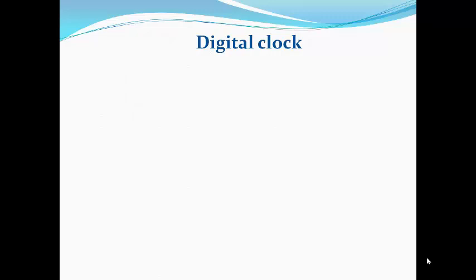We will go step by step to know all about time. Which device shows us the time? For sure, the watch or the clock. There are two kinds of watch: a digital clock and an analog clock.